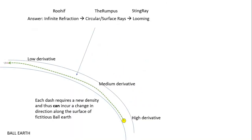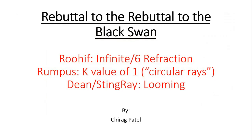So this is the story that ballers will have to cite. I just want people to know that the very foundation of their argument is non-physical, because they're requiring an infinite number of changes in direction along this surface, which will produce these surface rays. Infinite anything is just non-physical and a fairy tale from these math magicians — Ruhif, Rumpus, and Dean Stingray. It looks pretty good. We're on a flat earth. Hope everyone's doing well. Take care. Bye.